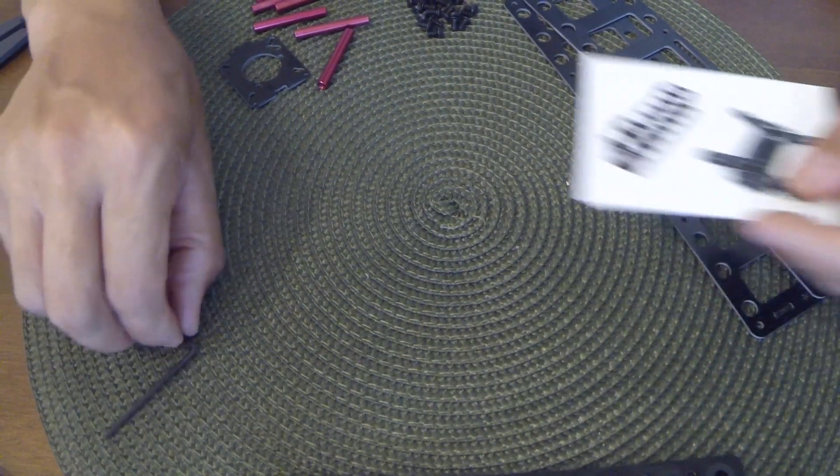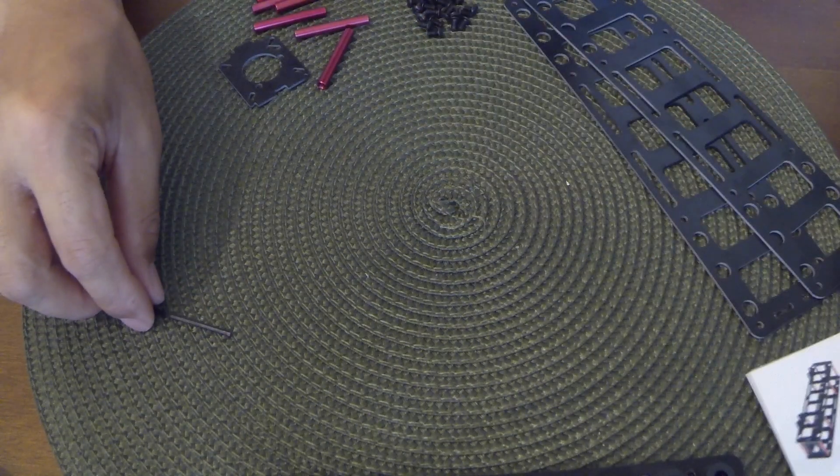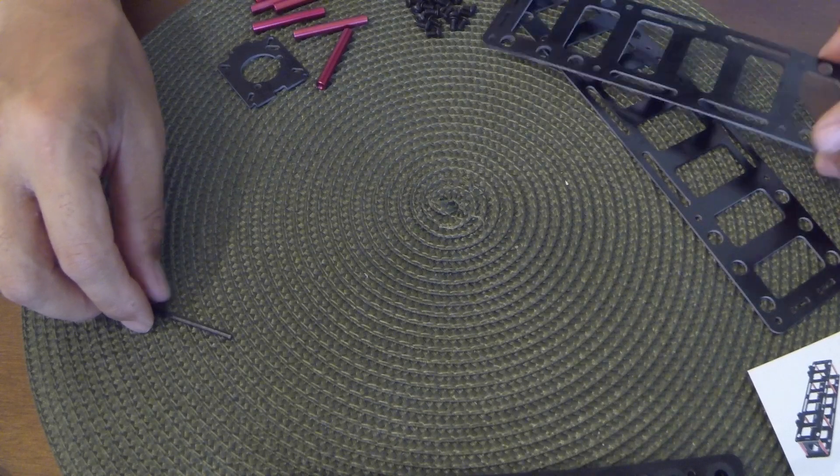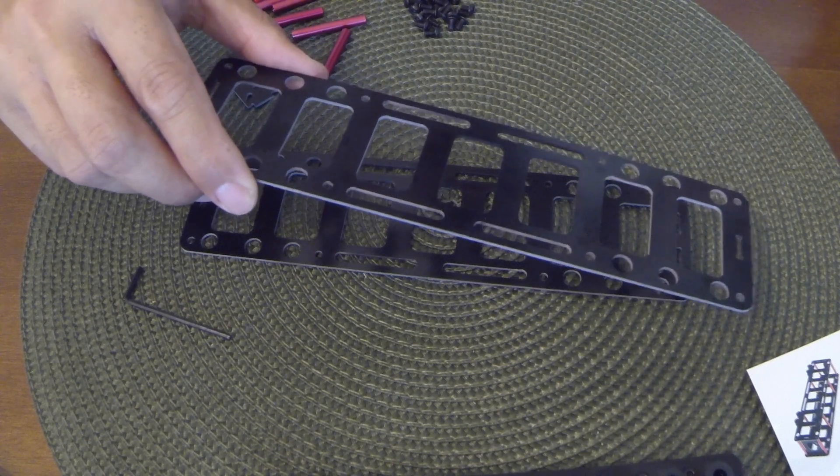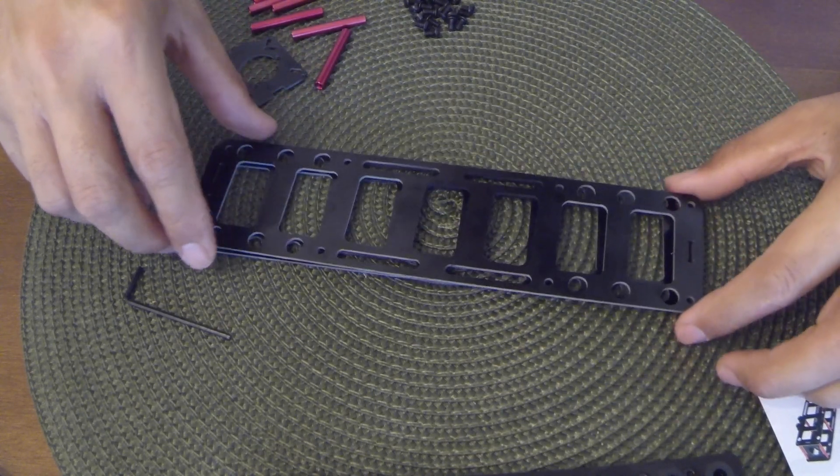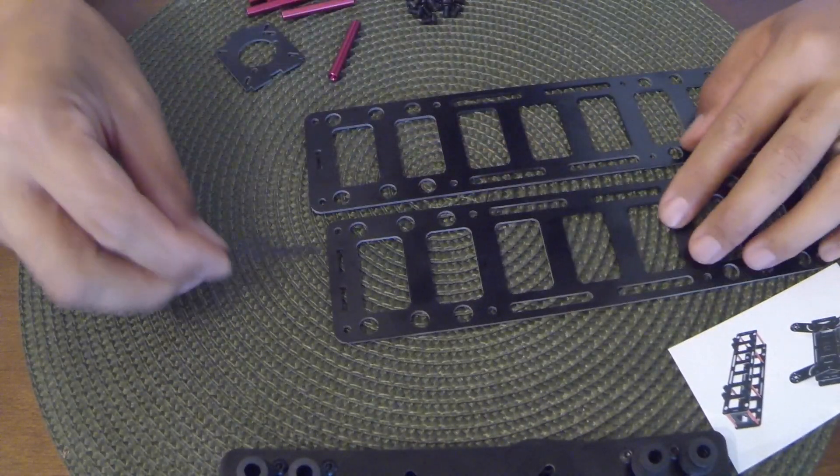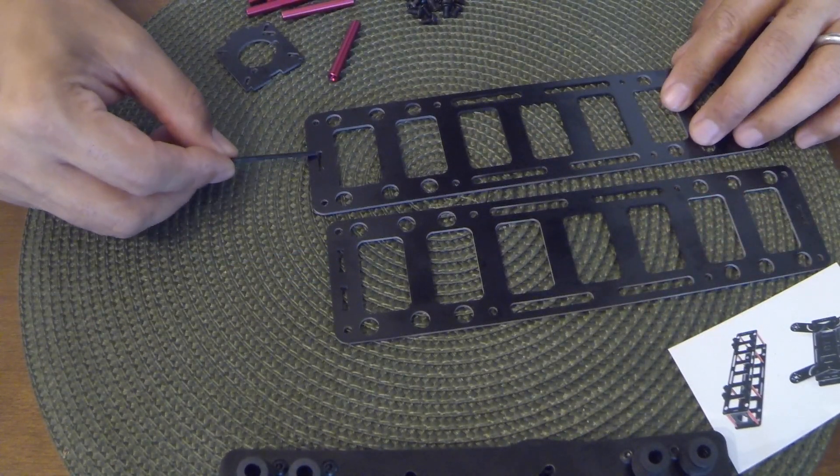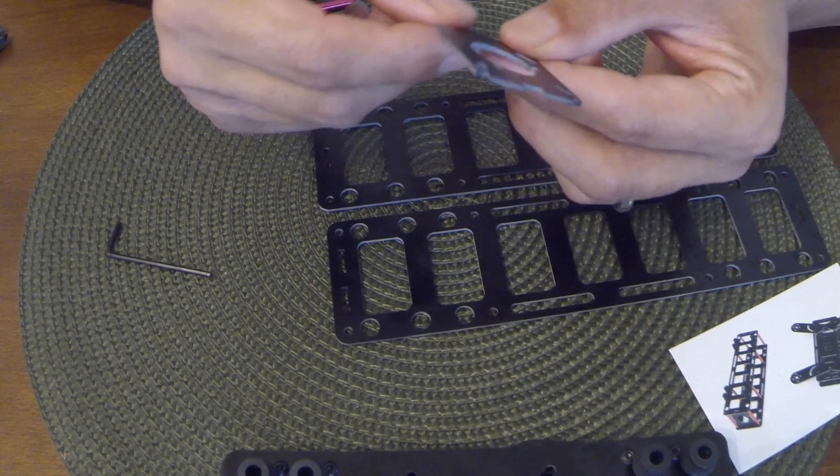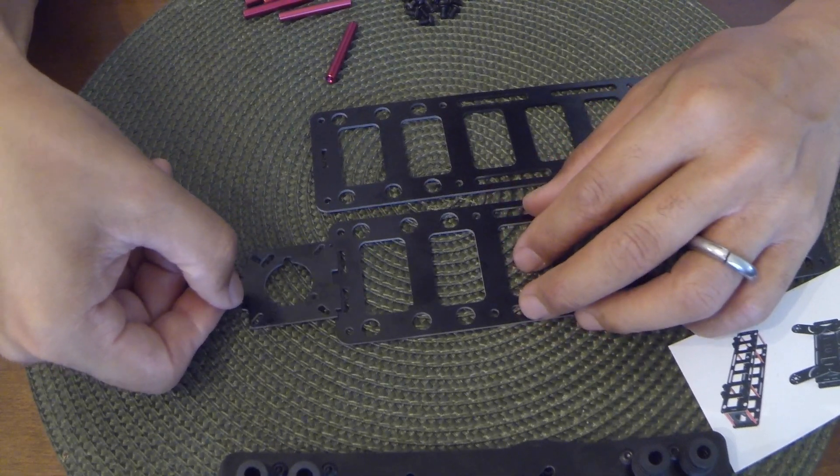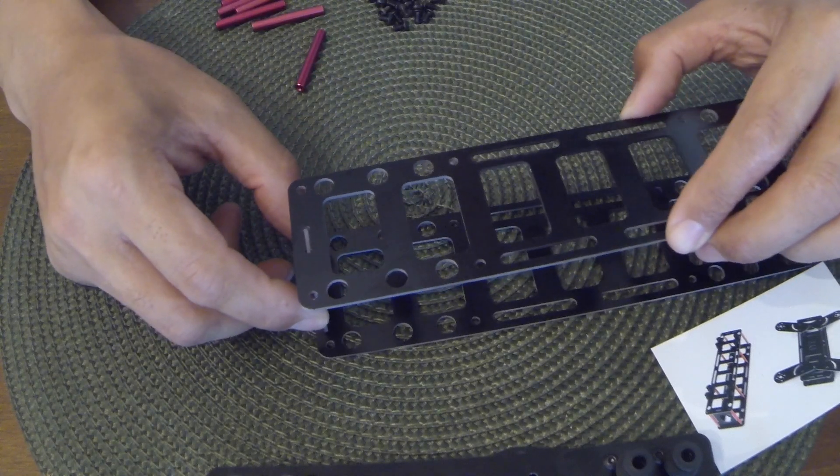So next you're going to want to assemble the clean side. Both of these plates are identical, so it doesn't matter which one you grab. But you need to take note of the slots. One of them has two slots and the other side should have one slot. And those should be together on the same end, because that's what's going to hold your board cam plate together. So keep that in mind when you're assembling this section.